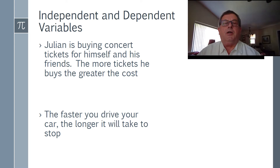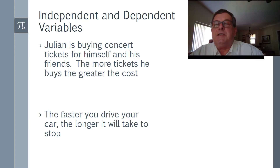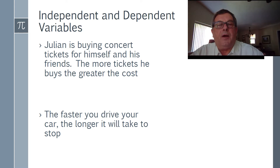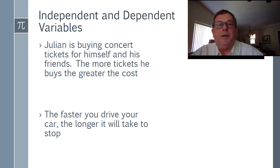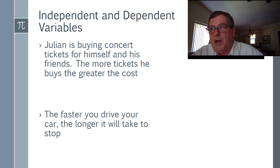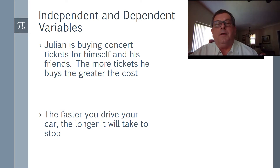Now let's look at a couple of verbal sentences and pick out the independent and dependent variables — what the x value and y value are going to be, the domain and range, the input and output. These are the things we're thinking about.